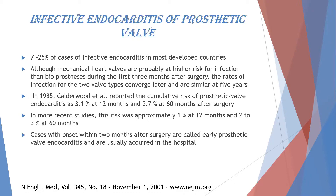In 1985, Calderwood and associates reported the cumulative risk of prosthetic valve endocarditis at 3.1% at 12 months and 5.7% at 60 months after surgery. In more recent studies, the risk was approximately 1% at 12 months and 2% at 60 months — a notable decline compared to data from 35 years ago. Cases with onset within two months after surgery are called early prosthetic valve endocarditis and are usually hospital-acquired.